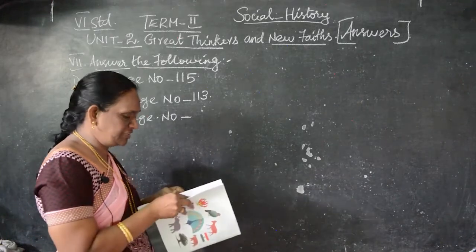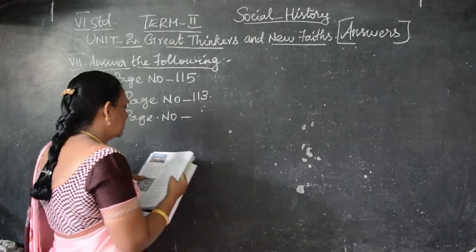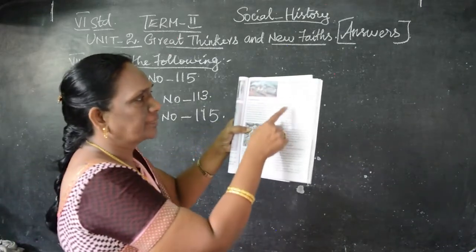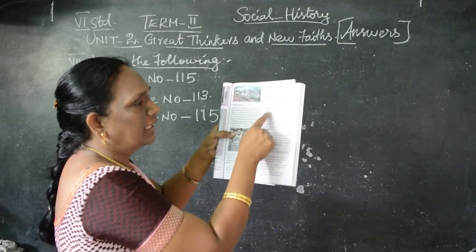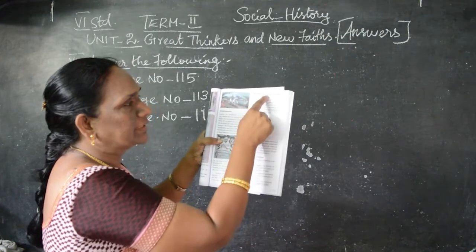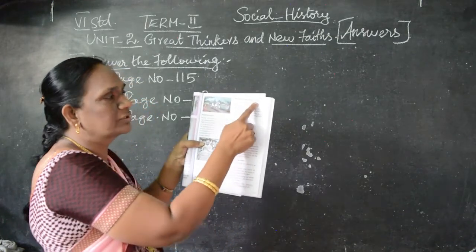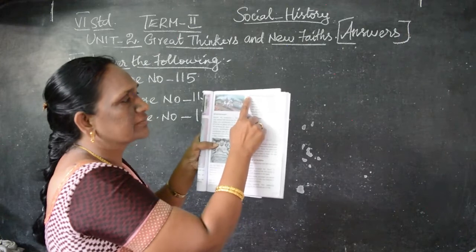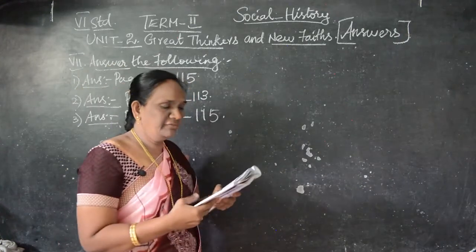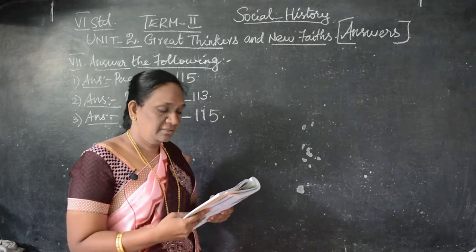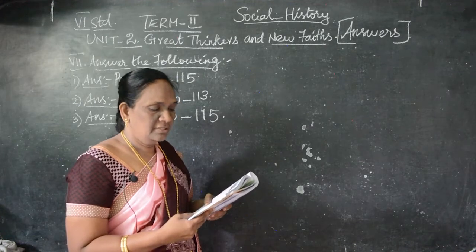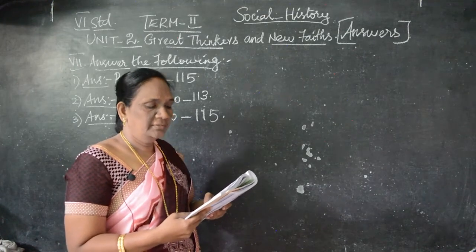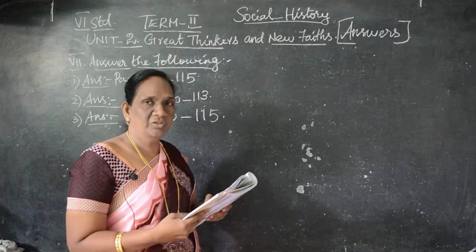It is on page number 115 — Buddha's four noble truths. I will read them out: First, life is full of sorrow and misery. Second, desire is the cause of misery. Third, sorrows and sufferings can be removed by giving up one's desire. Fourth, the desire can be overcome by following the right path.